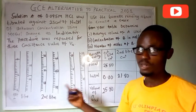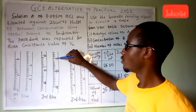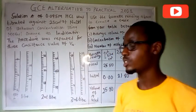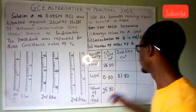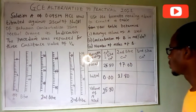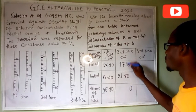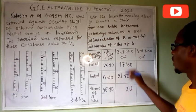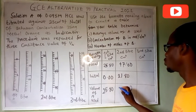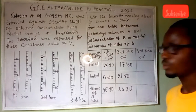Now the final reading for the second titration: the longest line falls on 47, so the final reading is 47.00. Subtracting 21.80 from 47.00 gives us 26.20. The difference between the first and second titrations is not quite much, so we can still work with these values.